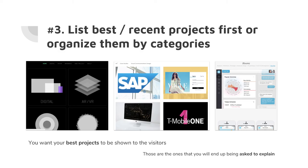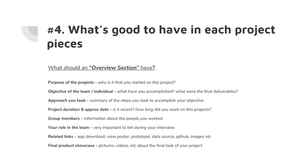List your best or recent projects first, or organize by categories. You can organize by recency, feature featured projects, sort by companies or clients, or divide by design type — UX process, visual design, or research. For the overview section of each portfolio piece, include the purpose of your project, what the objective was, and what you were trying to solve. Include snapshots of the final product so people don't have to scroll all the way down to see the UI design.